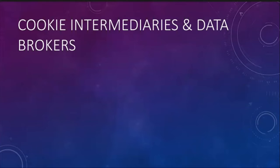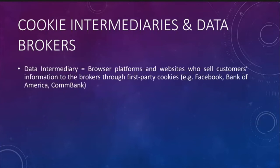Who is a cookie intermediary or data intermediary? A cookie or data intermediary is basically a browser platform or website who sells customers' information to brokers through first-party cookies. We already have first-party cookies — the website itself creating a cookie for your login details or shopping cart on Amazon. These are the data intermediaries creating those cookies. Examples are Facebook, Bank of America, and closer to home in Australia, CommBank. So it's not just things happening in the US — it's most certainly happening here in Australia too.